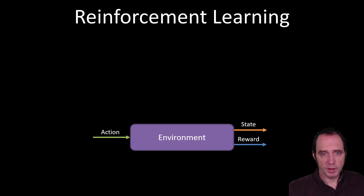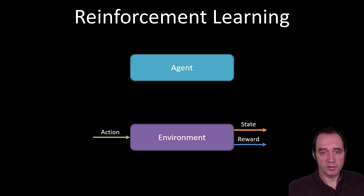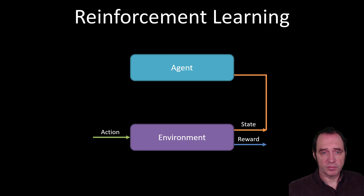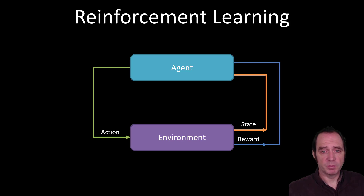In reinforcement learning, the algorithm that interacts with the environment is called an agent. The agent will be fed the current state of the environment, examine this state, and decide what action to take. Taking that action may result in a positive or negative reward. The agent is going to read in the reward and the new state of the environment and make a decision on the next action to take, running around this loop for a number of iterations.